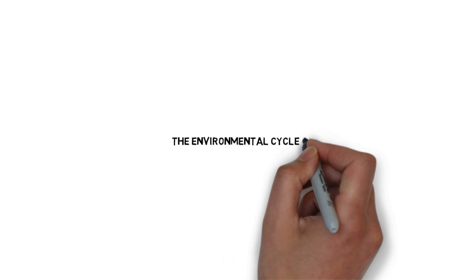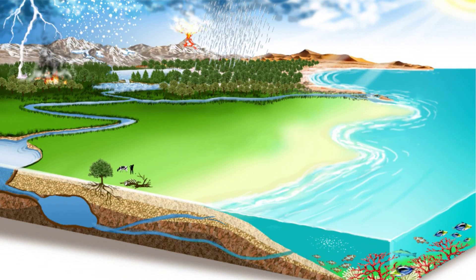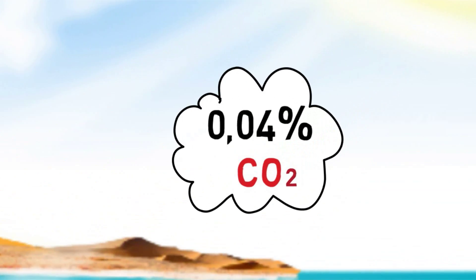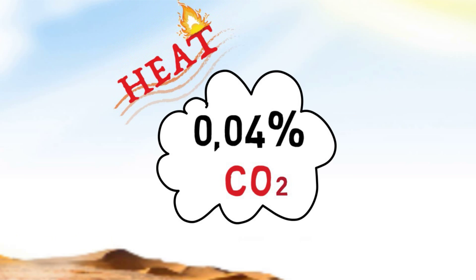The Environmental Cycles: Carbon. Less than 0.04% of the air composition is made of carbon dioxide. Yet this gas is transparent to most of the sun's radiation, implying that the higher the carbon dioxide in the air, the larger the proportion of solar radiation that is retained by the Earth as heat.